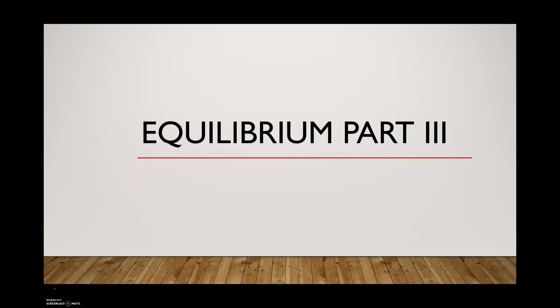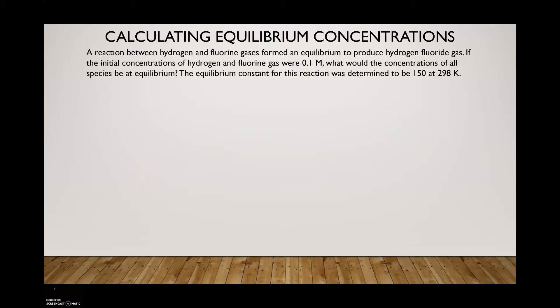We are going to be looking at equilibrium part three. This is the third part to the equilibrium series. In this part we are going to be talking about how to calculate the equilibrium concentrations given the initial conditions of a system. In the previous videos we talked about the reaction quotient and how to write the equilibrium expression, so this is a continuation. Those are the foundations for solving the problems we're going to be looking at.